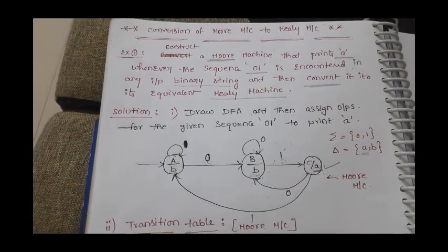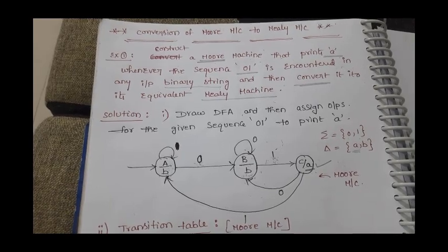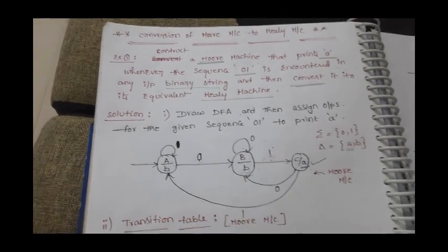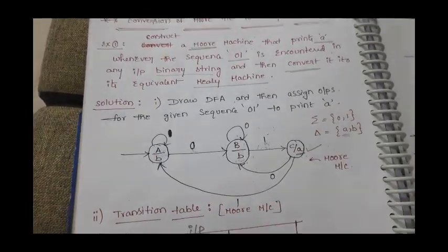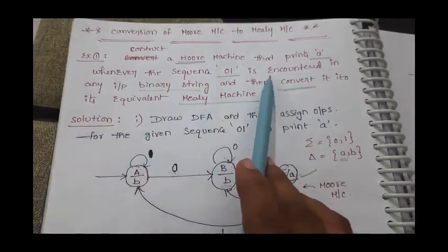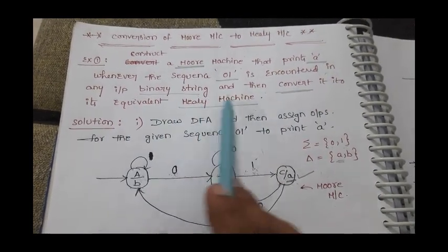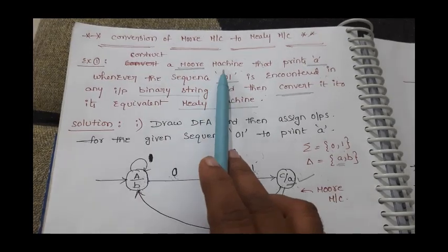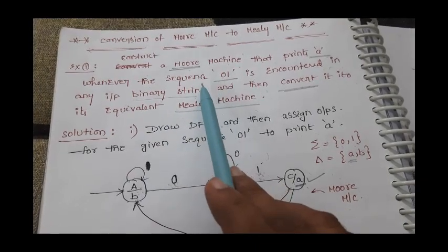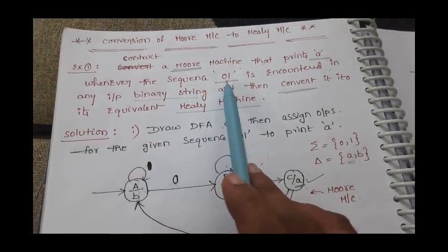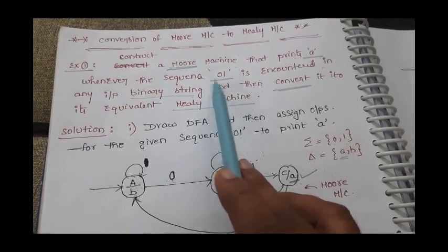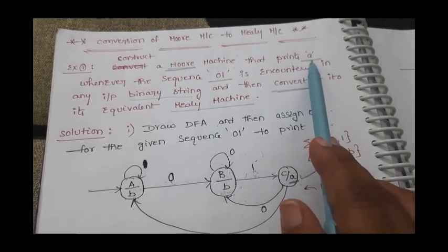In this session, let us discuss how to construct a Moore machine and convert it into a Mealy machine. We need to construct a finite state machine (FSM) which takes a binary string as input consisting of zeros and ones. Whenever the sequence 0-1 is encountered in the input binary string, it should print 'a'.